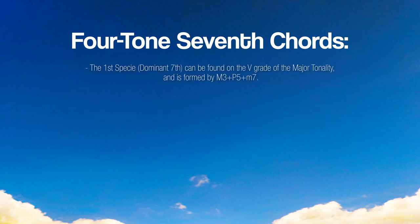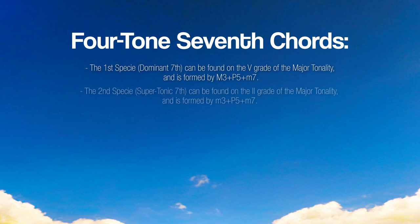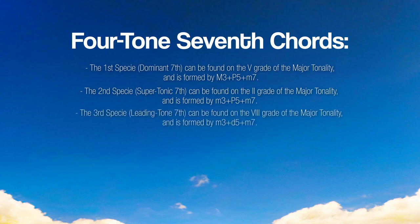The first species, dominant 7th, can be found on the 5th degree of the major tonality and is formed by a major 3rd plus a perfect 5th plus a minor 7th. The second species, supertonic 7th, can be found on the 2nd degree of the major tonality and is formed by a minor 3rd plus a perfect 5th plus a minor 7th. The third species, leading-tone 7th, can be found on the 7th degree of the major tonality and is formed by a minor 3rd plus a diminished 5th plus a minor 7th.